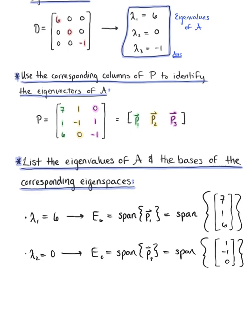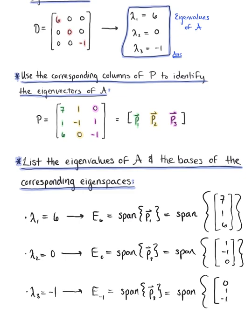And last but not least, our third eigenvalue is λ₃ = −1, with the corresponding eigenspace E₋₁, defined as the span of the third eigenvector p₃. This is the span of the vector (0, 1, −1).